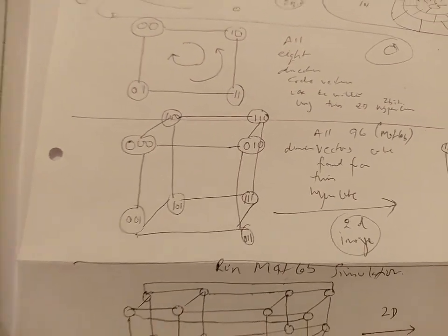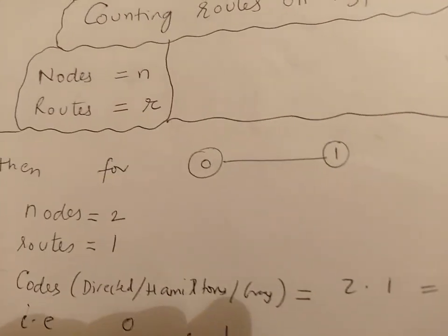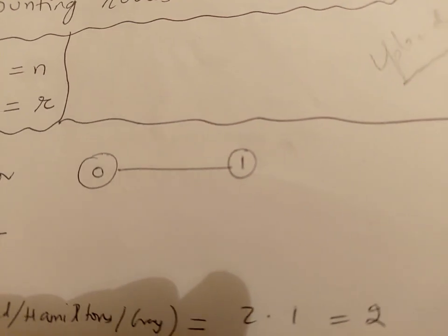So this 3D drawing can be reduced to a 2D drawing. Now what a Hamiltonian cycle is: you start from one node and reach the other node.